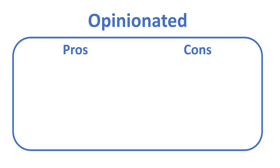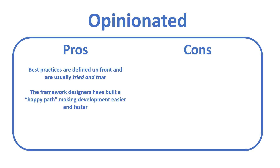So what does that mean? Well, if we take the opinionated frameworks and look at the pros and cons, usually the best practices are defined up front and are tried and true — whether in the directory structure, the MVC structure, or another way. The framework designers have also built what we could call a happy path, so it makes development easier and faster. Usually these frameworks also include a lot of functionality out of the box, with many libraries already included and ready to use.